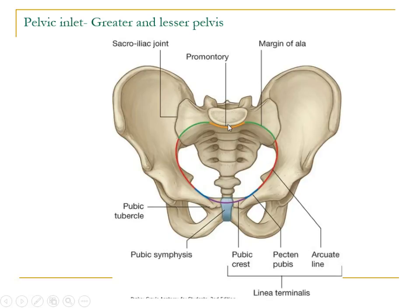The pelvic inlet is formed by the sacral promontory, the margin of the wing of the sacrum, followed by the arcuate line on the ileum, the pectin pubis or pectinate line, and the pubic crest anteriorly. It joins with the similar portion on the other side to form a rounded margin known as the pelvic inlet.